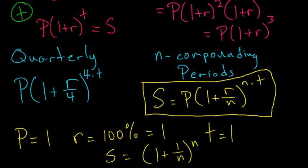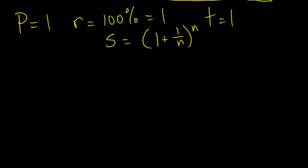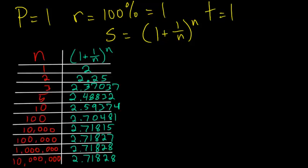So if I scroll down, we can look at a table for larger and larger values of N. So as you can see, as our N value gets larger and larger, this expression 1 plus 1 over N to the Nth power starts to approach some number. And as we'll find out, this number that it approaches, as N goes off to infinity, is E.